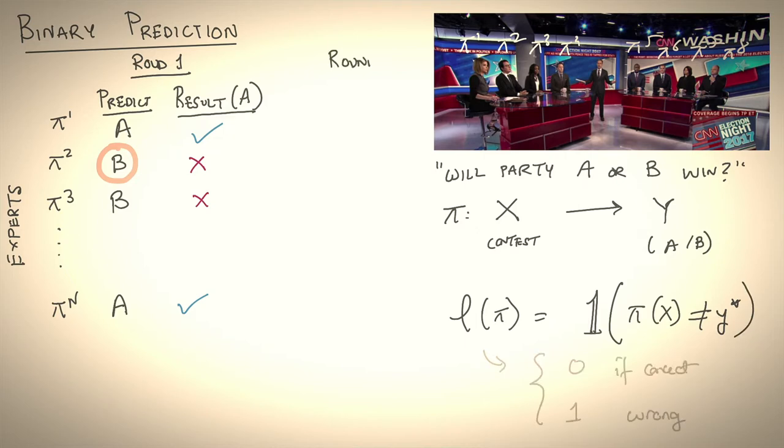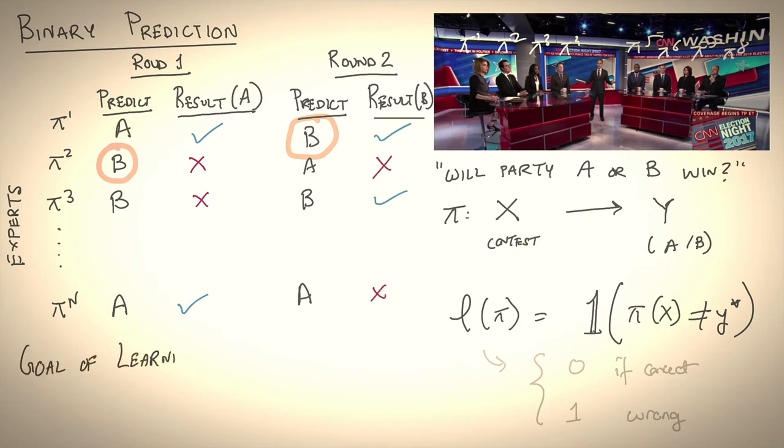The loss function here being, did you get the answer right or not? And then you play another round, maybe this time you decide to go with expert one, since it got the right answer in the previous round. And expert one flips its answer to party B, which happens to be the right answer, and you get a loss of zero in this round. So the goal of the learner is to choose an expert at time t so that it does as well in the game as possible, minimizes cumulative loss.